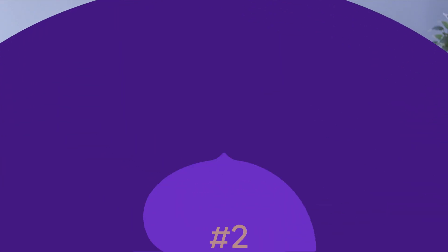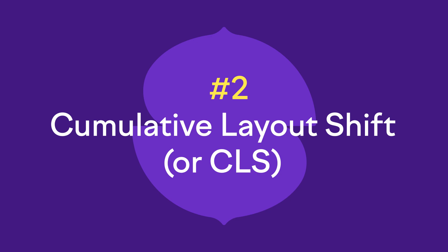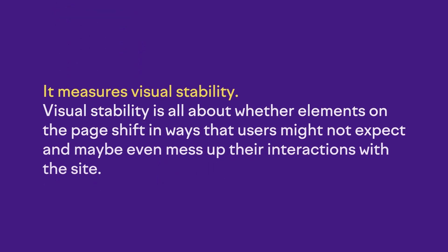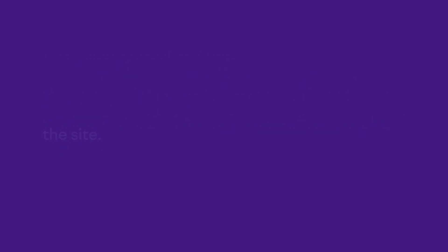The second is Cumulative Layout Shift, also known as CLS. This one measures visual stability — whether elements on the page shift in ways that users might not expect, and that may even mess up their interaction with the site.